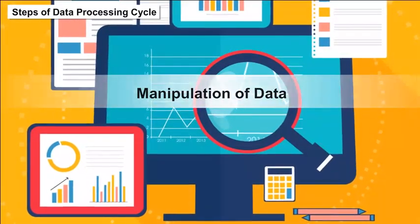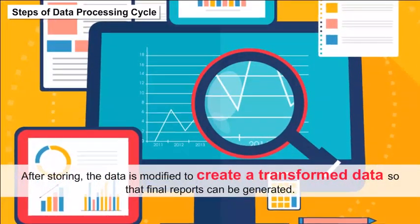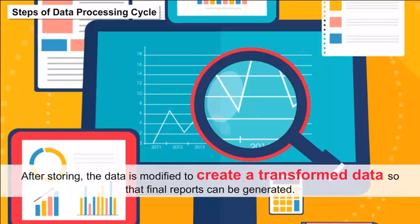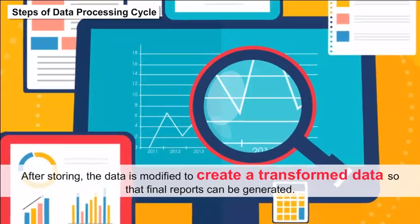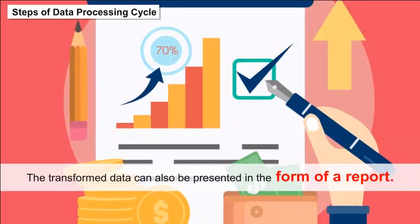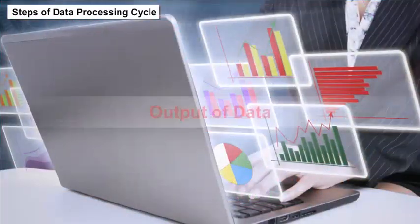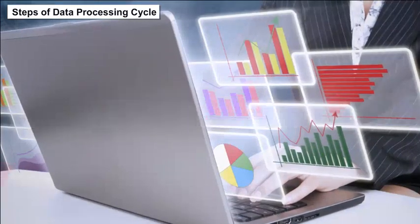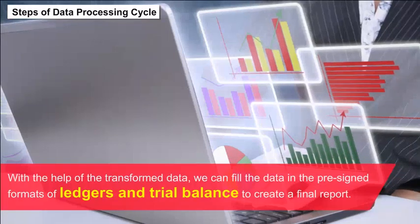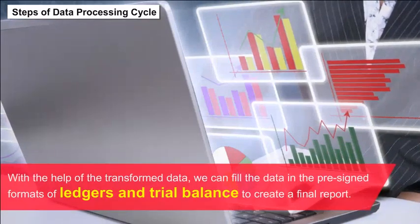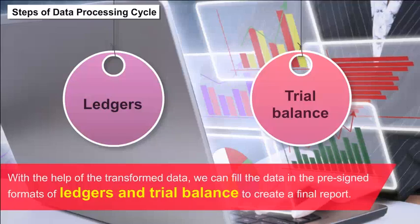Like code of account, name of account, and the category type to which it belongs. Manipulation of Data — after storing, the data is modified to create transformed data so that final reports can be generated. The transformed data can also be presented in the form of a report.